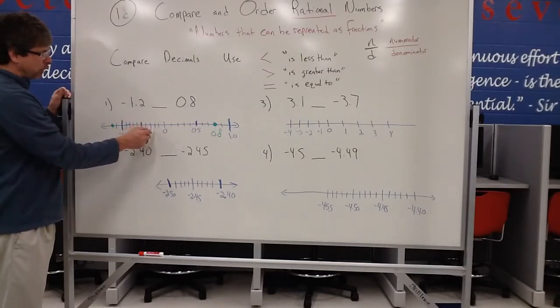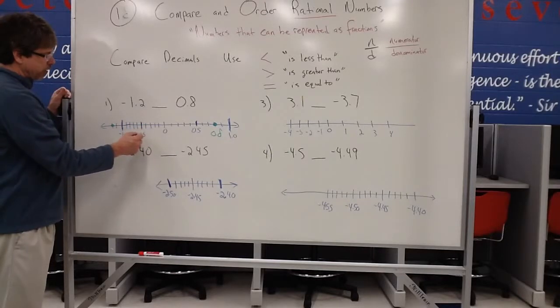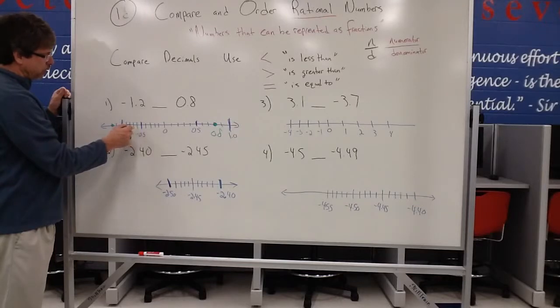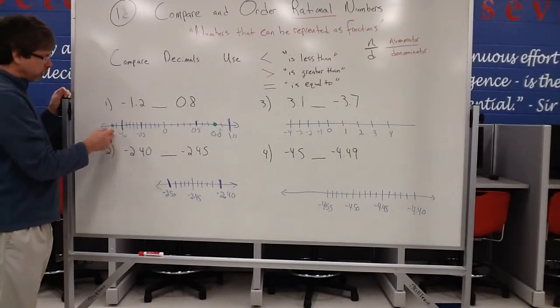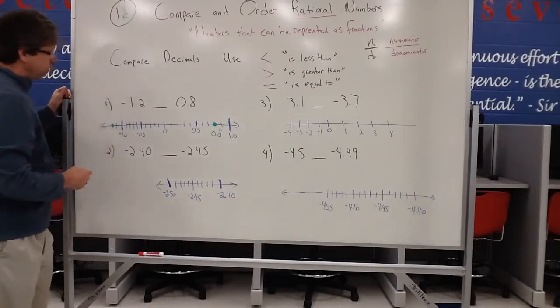So each one of these little tick marks is counted by tenths. So 0.1 or negative 0.1, negative 0.2, negative 0.3, negative 0.4, negative 0.5 or negative 5 tenths, negative 0.6, negative 0.7, negative 0.8, negative 0.9. And there's negative 1. And so there's our negative 1.2.